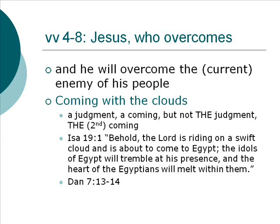It's a reference to the way God comes to destroy wicked people. Isaiah 19: 'The Lord is riding on a swift cloud and is about to come to Egypt; the idols of Egypt will tremble at his presence and the heart of the Egyptians will melt.' Think about what John is writing — the crisis facing these people is persecution because they won't worship the emperor, the emperor cult, idols. John quotes a passage about God destroying a nation full of idolaters and says he's going to do it in your case as well. He destroyed that idolatrous nation; he's going to destroy this one too. It's about judgment, but not the final judgment — not the second coming.